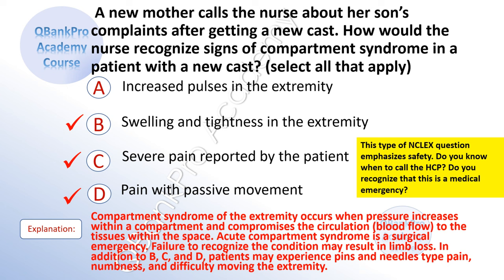Compartment syndrome of the extremity occurs when pressure increases within a compartment and compromises the circulation and blood flow to tissues within the space. Acute compartment syndrome is a surgical emergency. Failure to recognize the condition may result in limb loss. In addition to B, C, and D, patients may experience pins and needles type pain, numbness, and difficulty moving the extremity. This type of NCLEX question emphasizes safety — do you know when to call the healthcare provider and recognize this as a medical emergency?